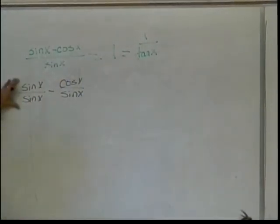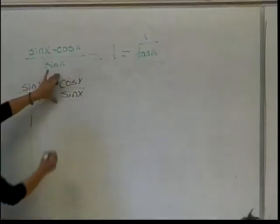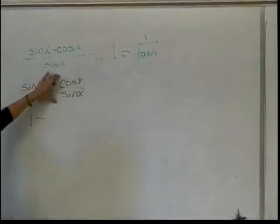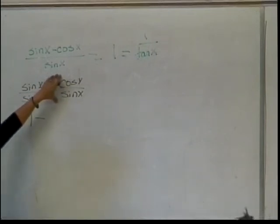Sine of x divided by sine of x can be simplified to be? One. We know what the cosine of x over the sine of x is. Yes? What is it?